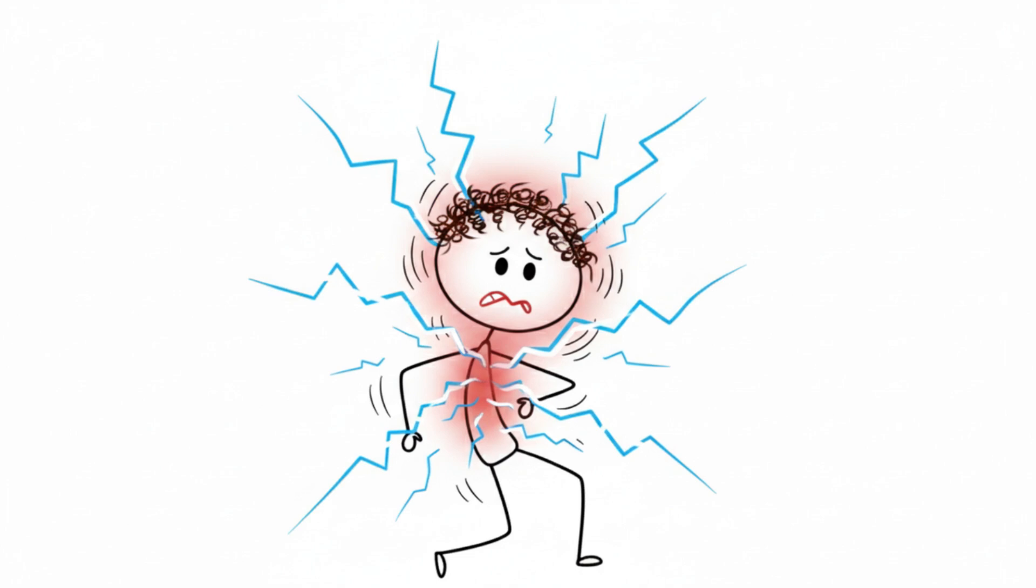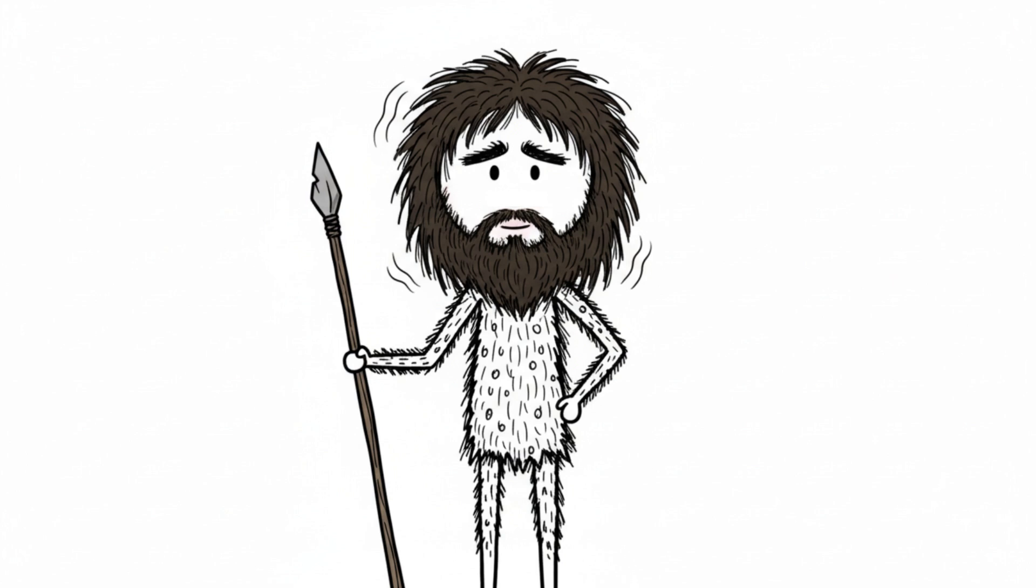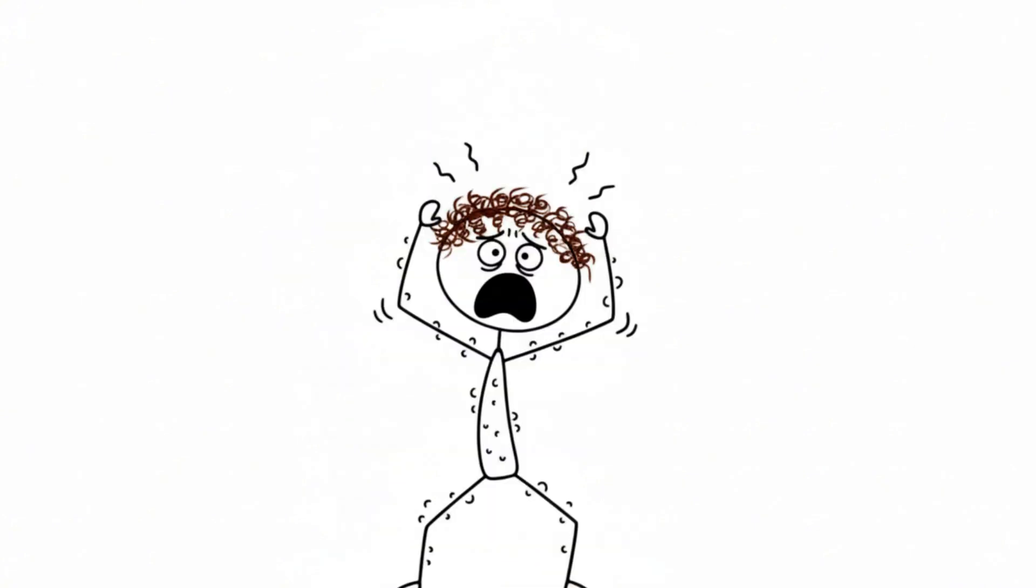Number 11: goosebumps. Ah yes, goosebumps, that adorable little shiver you get during a sad song or when it's cold. Totally normal, right? Except this is one of those leftover body features from when your ancestors were angry fur balloons. Back when humans were covered in more hair, goosebumps helped trap heat and made us look bigger when threatened, like a cat puffing its tail at a vacuum cleaner. But now, without fur, it's just your skin performing a useless intimidation dance.